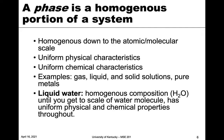A phase, when we talk about a phase, the simplest explanation is that it's a homogeneous portion of a system. When I say homogeneous, I mean uniform down to the atomic and molecular scale — uniform in physical characteristics and uniform in chemical characteristics.